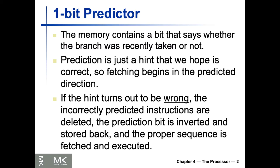What it does is use a memory bit that says whether the branch was recently taken or not. We go with that prediction depending on whether the bit was set to zero or one. As soon as we hit a misprediction on the branch, we have to set the bit the other way around — if it was zero it becomes one. If the hint turns out to be wrong, we invert the bit.